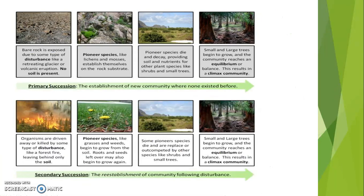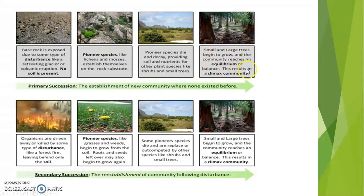This diagrammatic chart shows primary succession as the establishment of a new community where none existed before. Starting from bare rock — exposed due to disturbance like a retreating glacier or volcanic eruption — with no soil present, pioneer species like lichens and mosses establish themselves on the rock substrate. These pioneer species die and decay, providing soil and nutrients for other plant species like shrubs and small trees. Small and large trees then begin to grow, and the community reaches an equilibrium, resulting in the climax community. This is the progression from pioneer species to climax community.